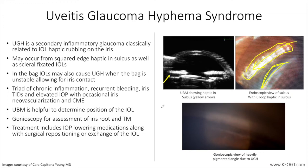UGH syndrome is classically associated with the triad of chronic inflammation, recurrent bleeding, and iris transillumination defects, with associated elevated intraocular pressure and occasional iris neovascularization and cystoid macular edema. The patient may present with complaints of episodic blurring of vision due to repeated hyphemas, photophobia, red eye, and pain.